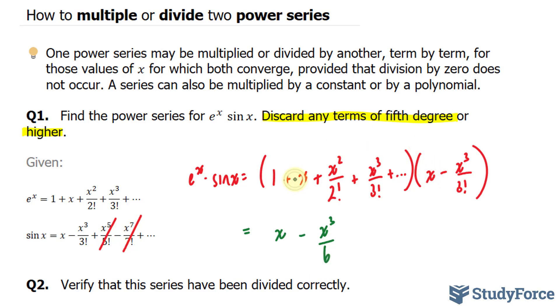Now I'll take this term, multiply it to the x, that gives me x to the power of 2, and this term multiplied to the x gives me negative x to the power of 4 over 3 factorial, which is equal to 6.